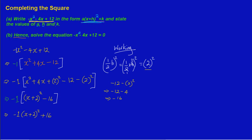To finish part A, we state the values of a, h, and k by comparison. A is the coefficient in front of the bracket, so a equals negative 1. H is the second term inside the bracket, so h equals 2. K is the constant outside, so k equals positive 16. That's our answer for part A.